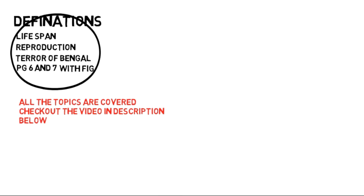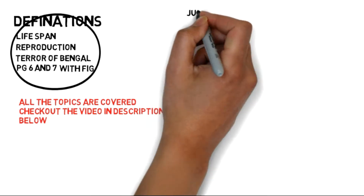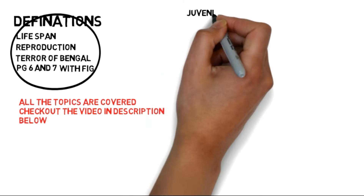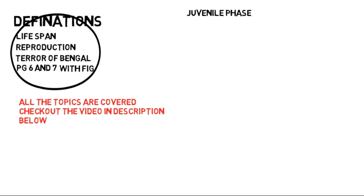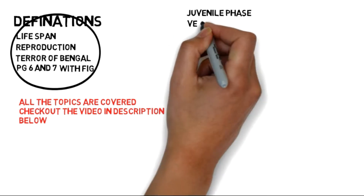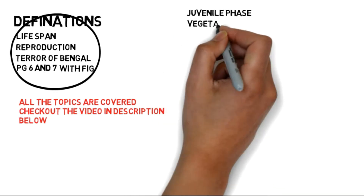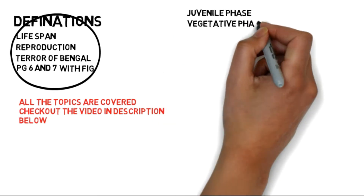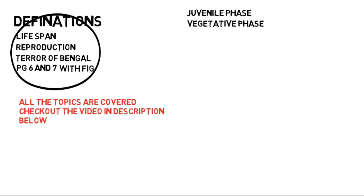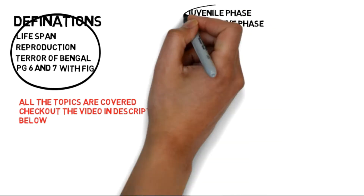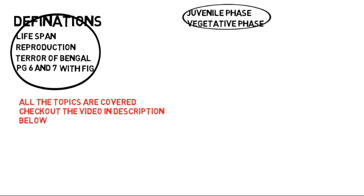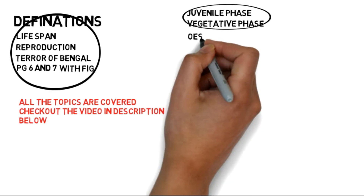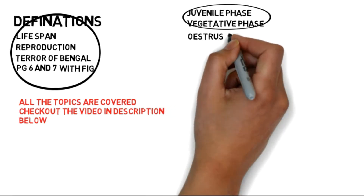Now let's come to the Juvenile phase. All organisms have a certain stage of growth which they must reach before they can reproduce — this is the growth stage. In animals it is called the juvenile phase, and in plants it is called the vegetative phase.